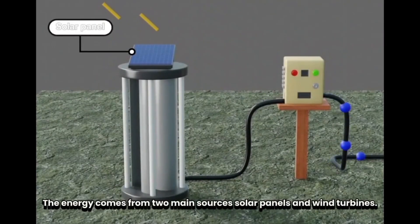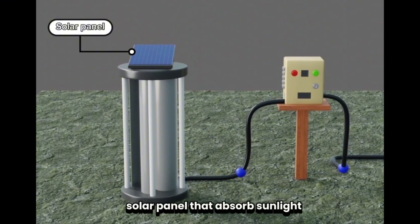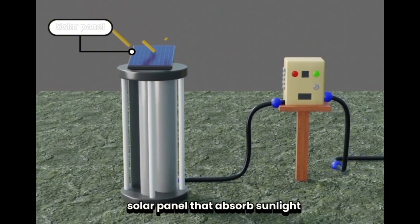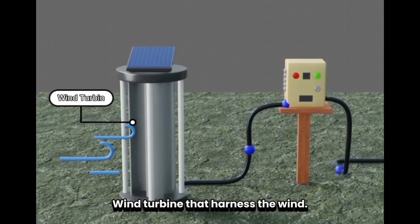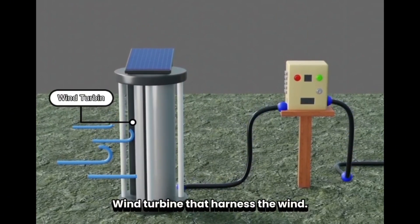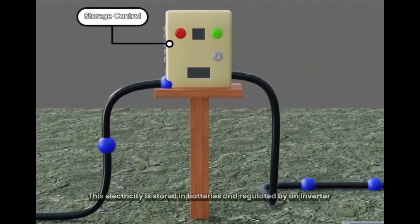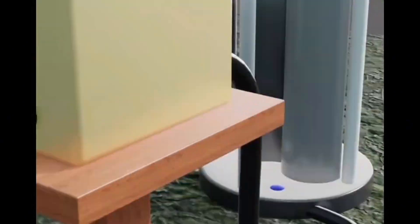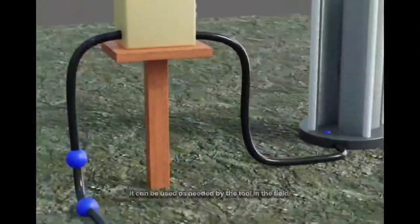The energy comes from two main sources: solar panels and wind turbines. Solar panels absorb sunlight, wind turbines harness the wind. This electricity is stored in batteries and regulated by an inverter. It can be used as needed by the tools in the field.